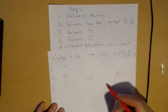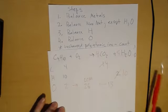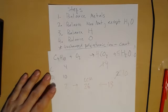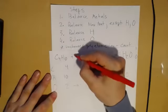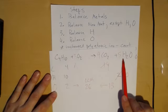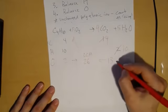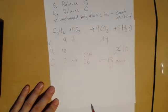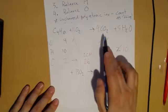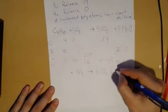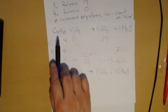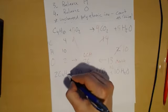What's the lowest common multiple of 2 and 13? They're both prime numbers, so the LCM is 26. I want 26. I'll put 13 in front of O₂ — that's 26. Now I double everything on the product side: 8 CO₂ and 10 H₂O. That changes carbons to eight, so I go back and put a two in front of C₄H₁₀. Final answer: 2C₄H₁₀ + 13O₂ → 8CO₂ + 10H₂O.